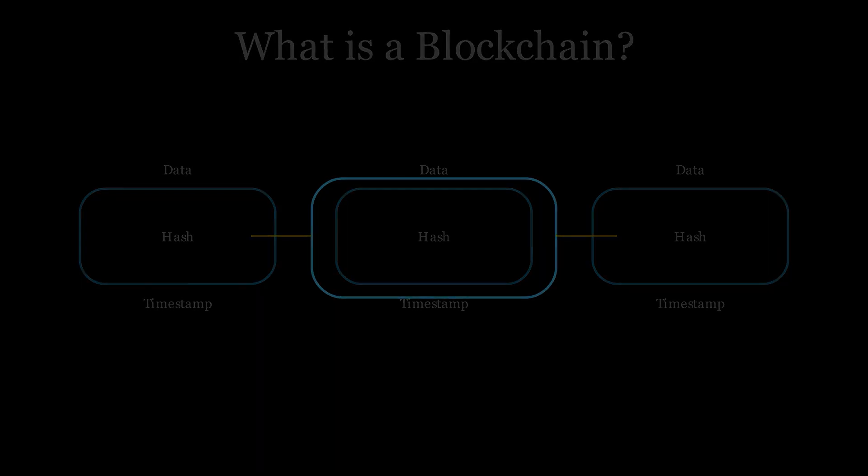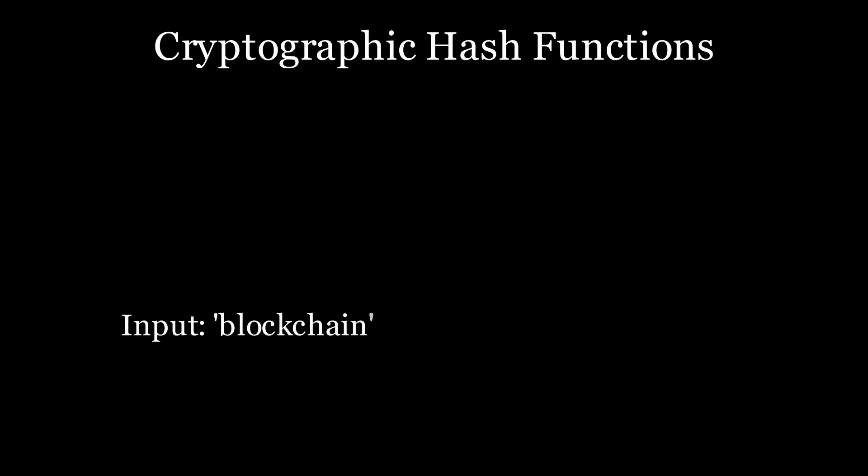A cryptographic hash function transforms input into a fixed length output. For example, the string blockchain becomes 235-6D-AE6 and so on. Why is this so powerful? This is because of three key properties.